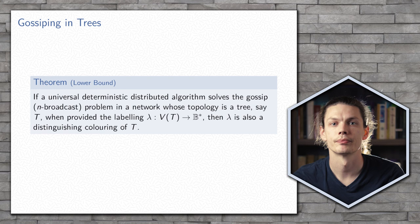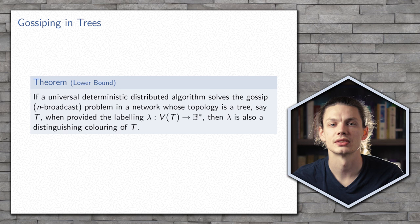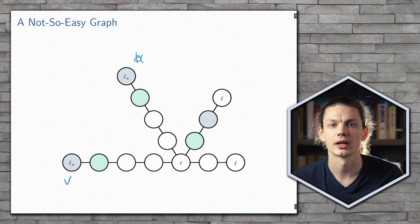With this definition in mind, we came up with the following lower bound: if any labelling is sufficient to complete gossiping in a tree, then that labelling is also a distinguishing colouring of the graph. The intuition here is that when we look at the path between a vertex and its image under an automorphism, if they have the same labelling, then the entire path must behave identically.